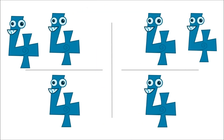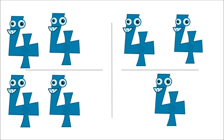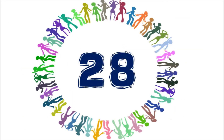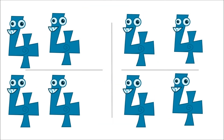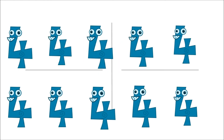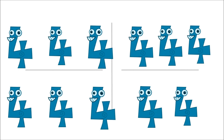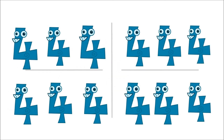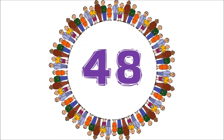Six fours are twenty-four. Seven fours are twenty-eight. Eight fours are thirty-two. That's true! Nine fours are thirty-six. Ten fours are forty. Forty! Eleven fours are forty-four. Twelve fours are forty-eight.